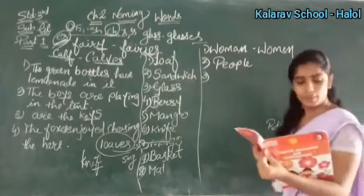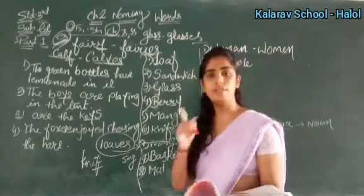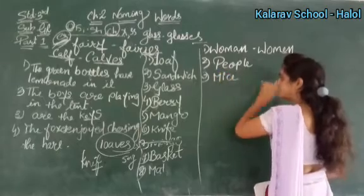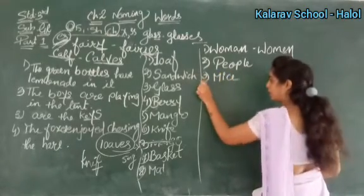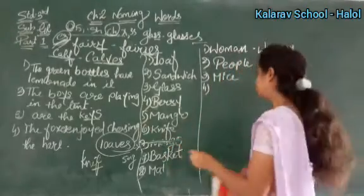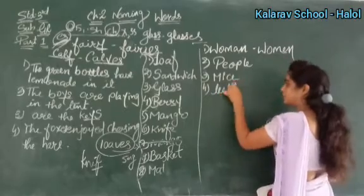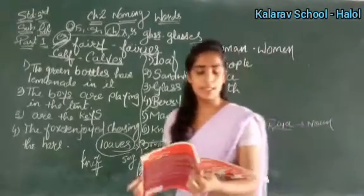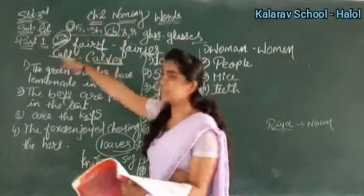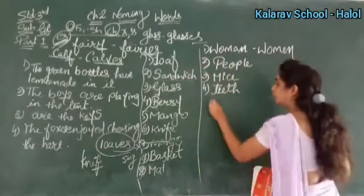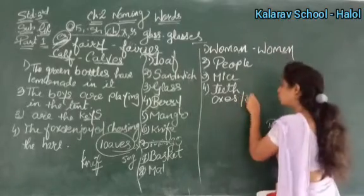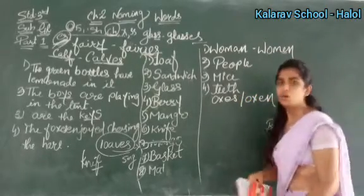Next: mouse means only one rat — plural: mice. Mouses nahi likhenge, mice likhenge. Tooth — plural: T-E-E-T-H, teeth. Ox — plural: oxen. X hoga toh ES bhi sahi hai — oxes — ya O-X-E-N bhi likh sakte ho. Both are right. Foot — plural: feet (double E). Goose — plural: geese. Cactus — plural: cactuses.